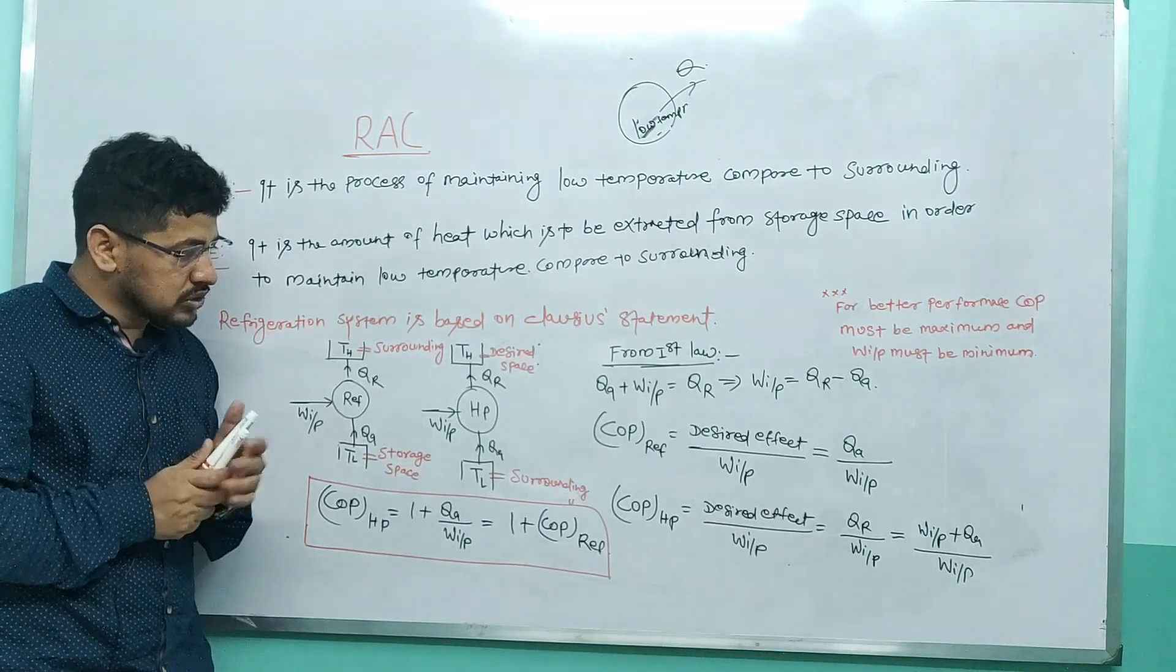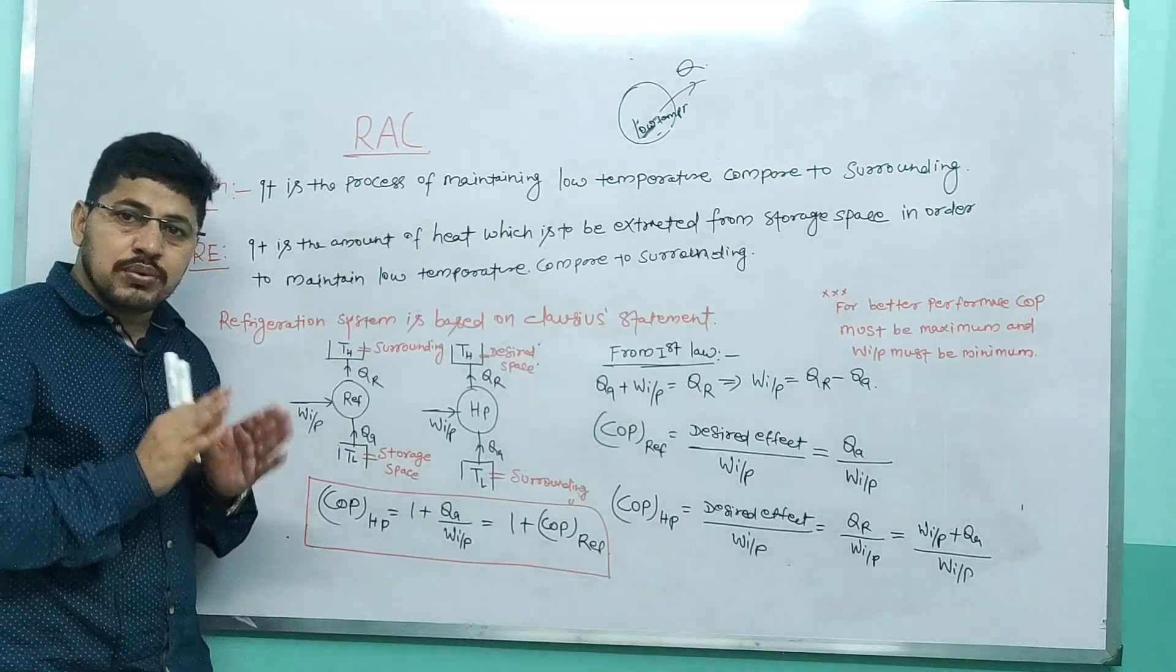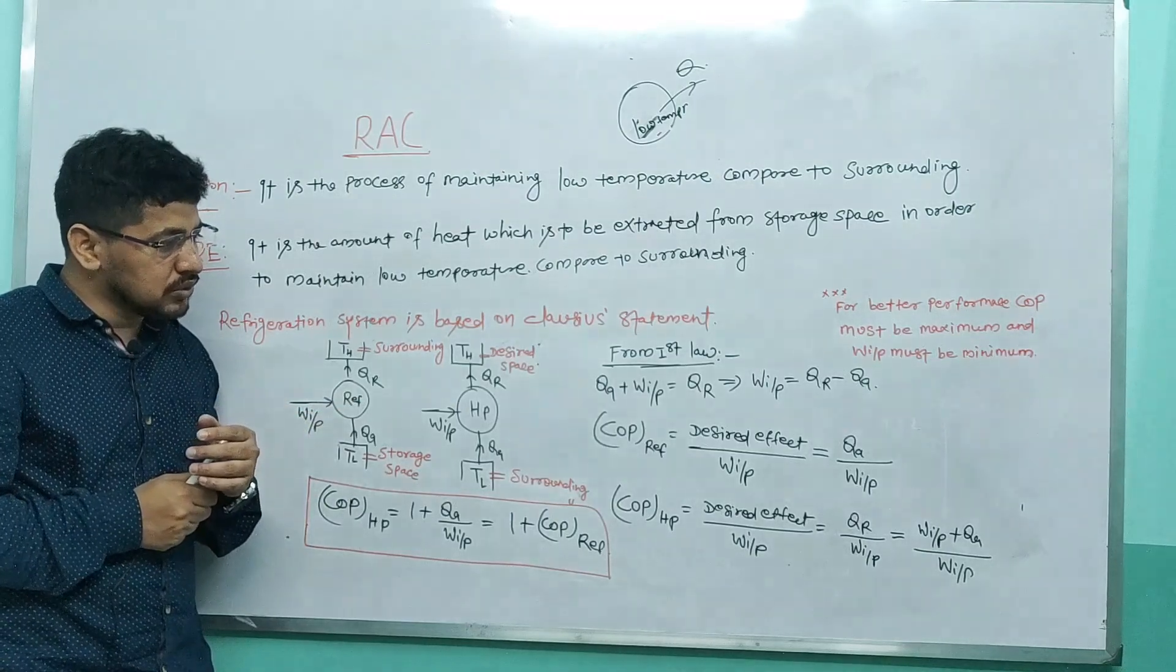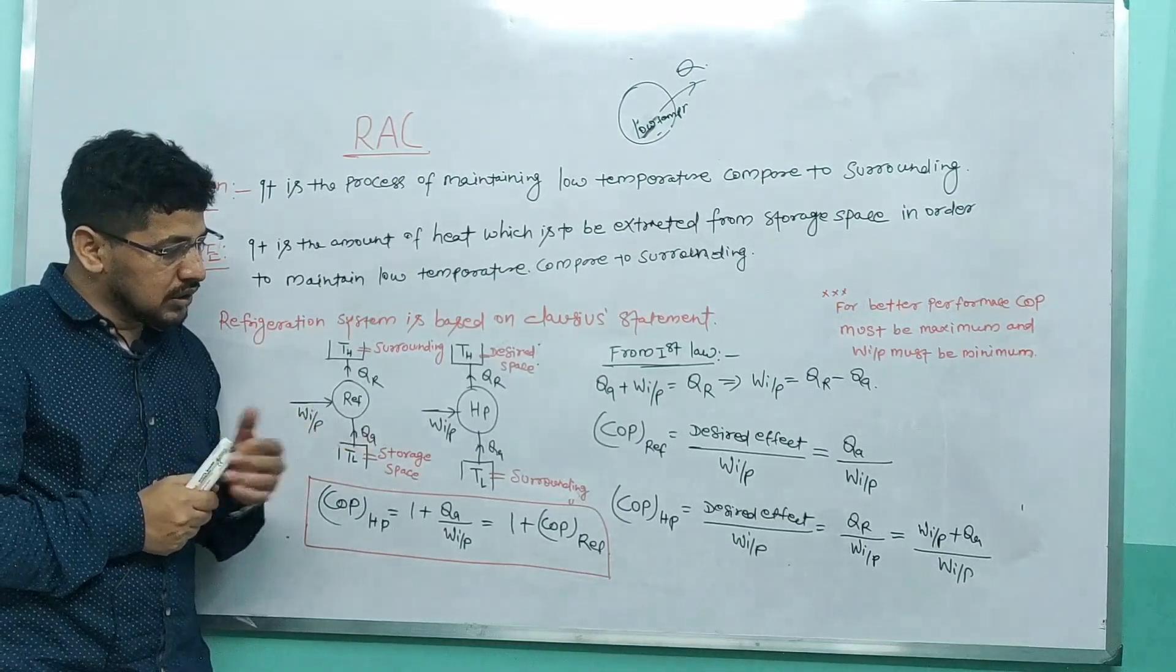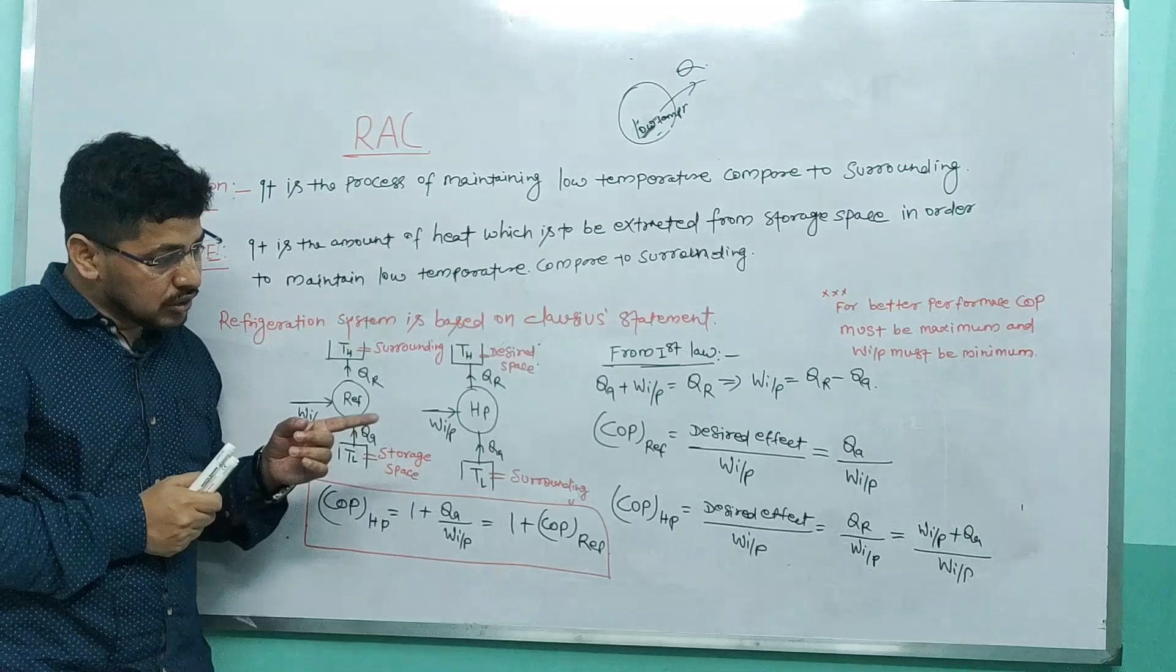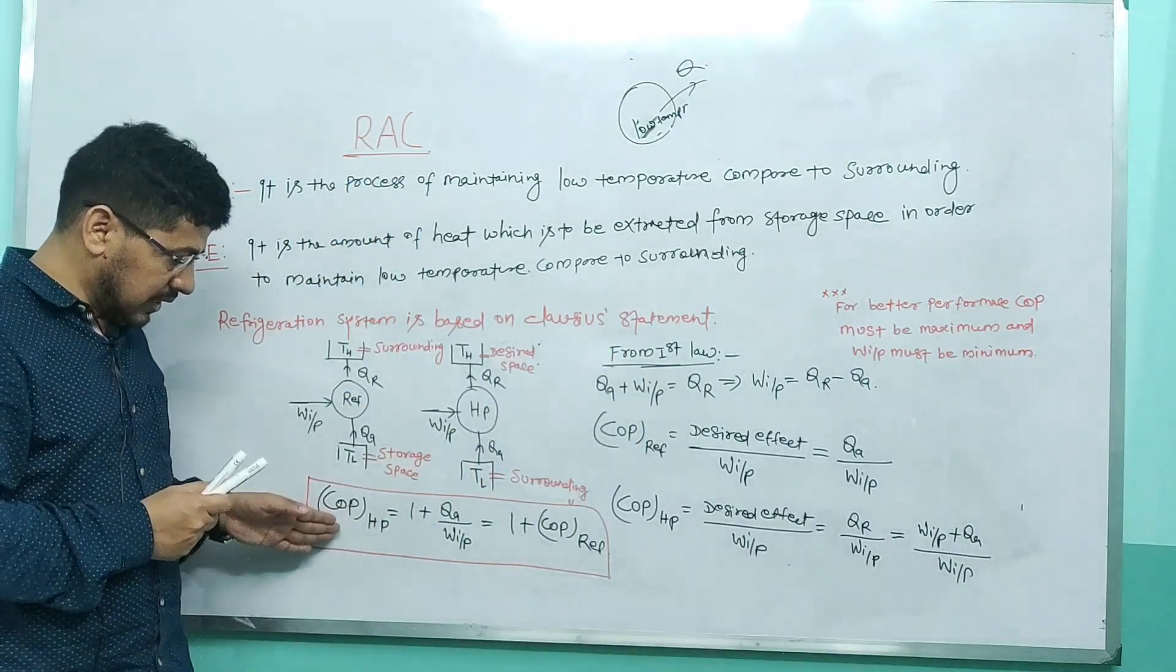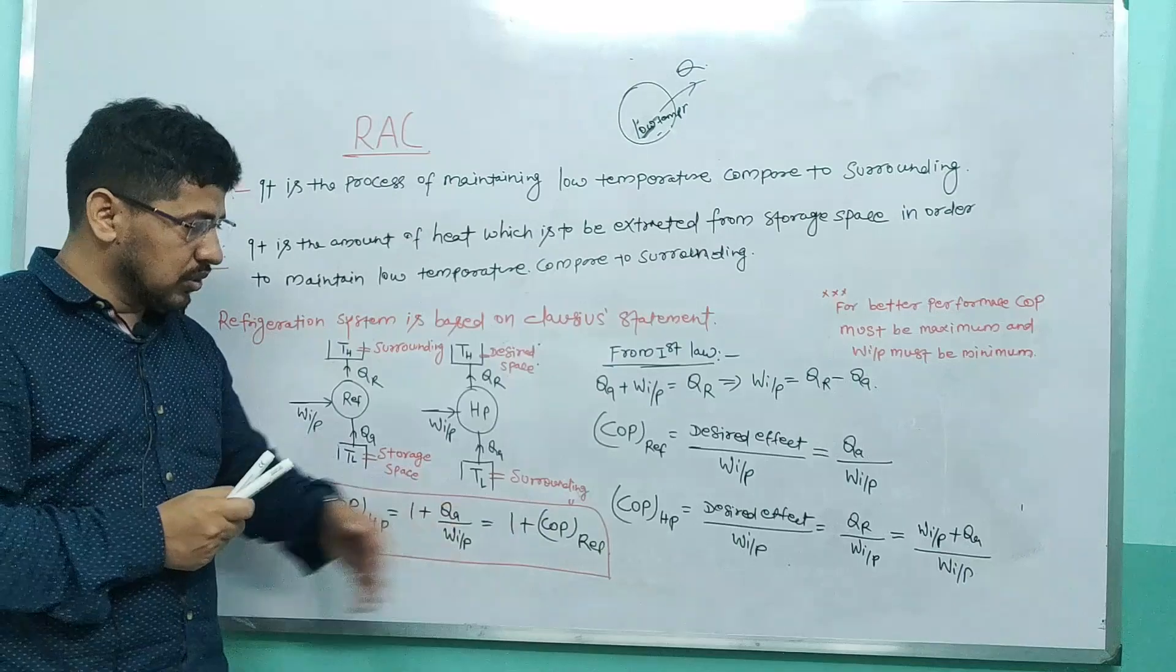Reverse heat engine performance is measured by coefficient of performance. COP is ratio of desired effect and work input. For refrigerator, desired effect is QA, so COP equals QA upon work input. For heat pump, desired effect is QR, which is QR upon work input. From first law of thermodynamics, QA plus work input equals QR.